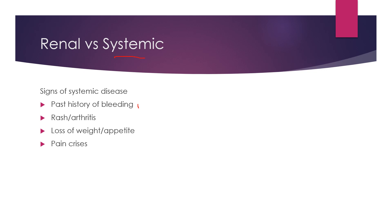Ask about past history of bleeding — remember, coagulopathy very rarely presents as hematuria as the first symptom. If there is associated bleeding from other sites, then consider it. Rash or arthritis is important for SLE and Henoch-Schönlein purpura. Ask about loss of weight or appetite — that can be part of any systemic illness or malignancy. Ask about pain crisis — sickle cell can present with pain crisis and later come with hematuria.